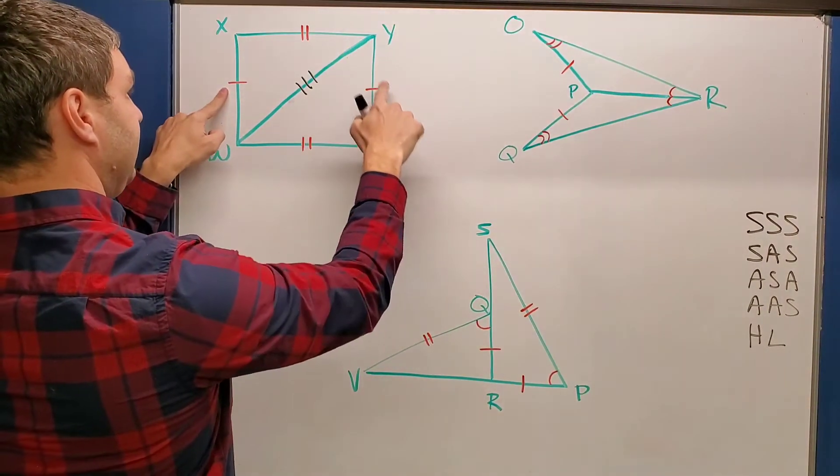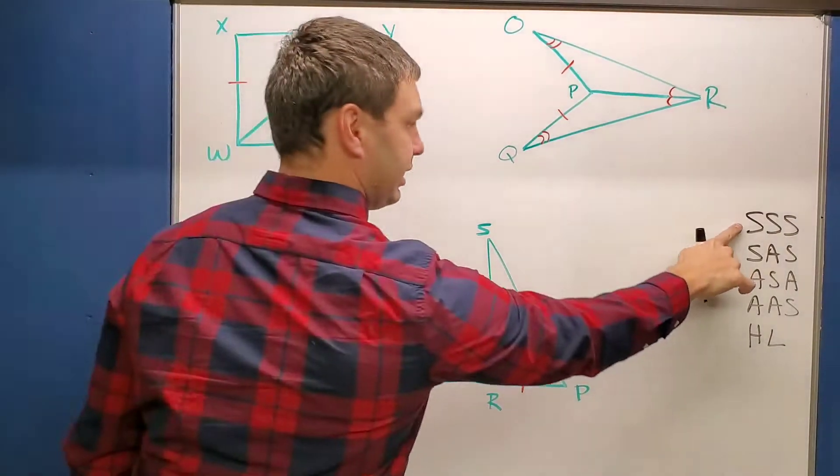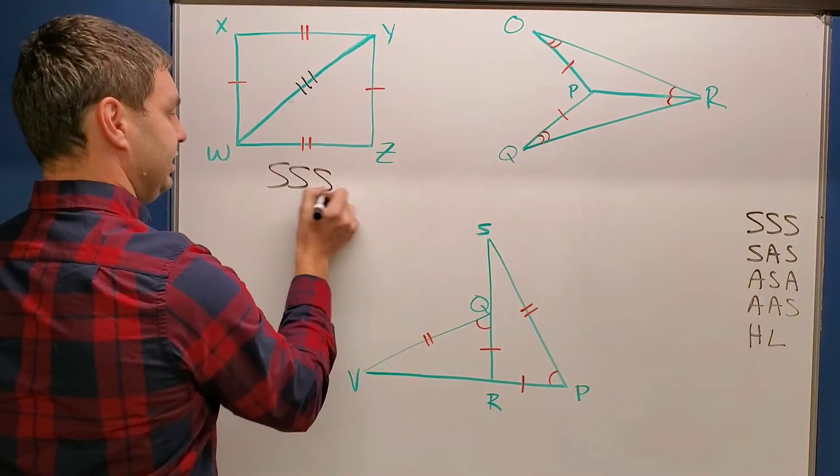Therefore this says side, side, side. So we're going to say this is side, side, side congruence.